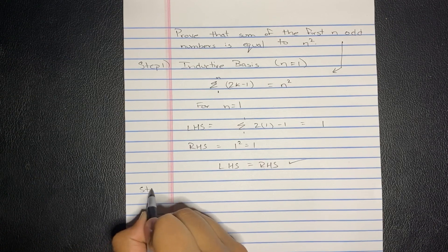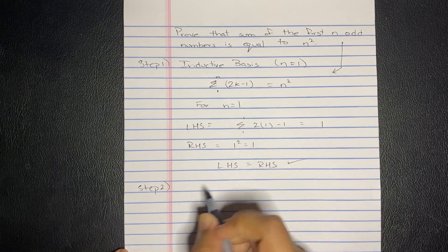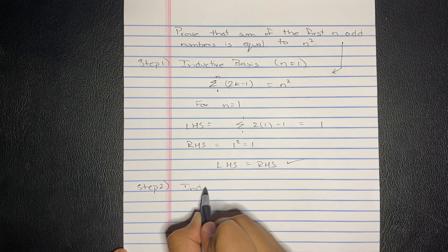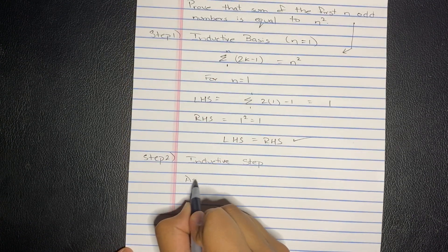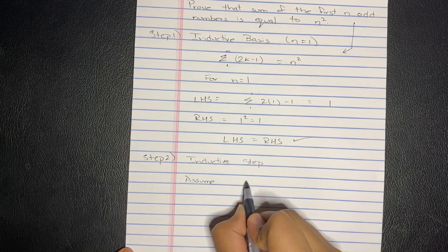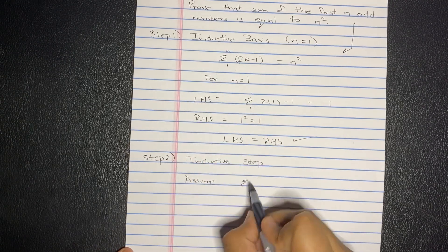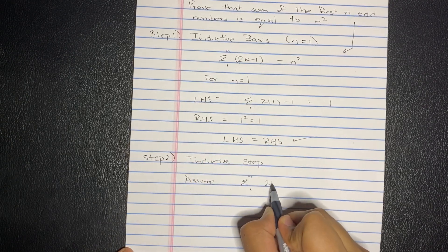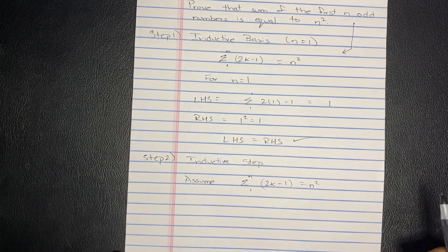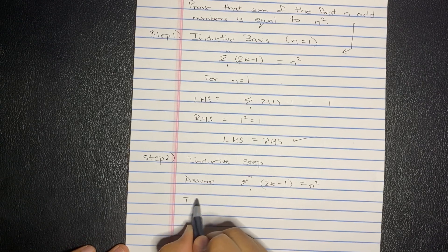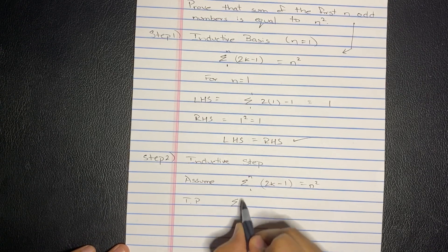Now step two is called inductive step. So basically, we assume that this is true. Summation of 1 to n, 2k minus 1 equals n squared. We assume this is true, and we have to prove that it also holds true for n plus 1.